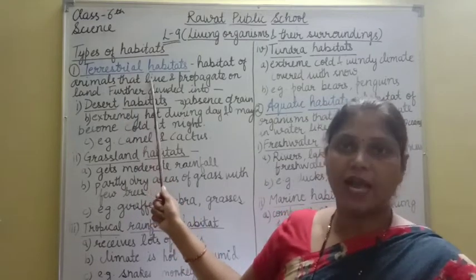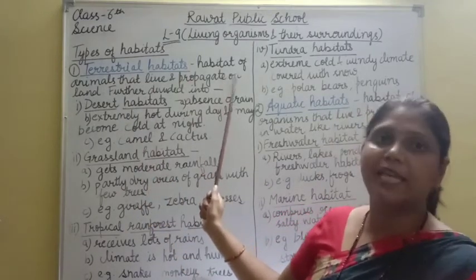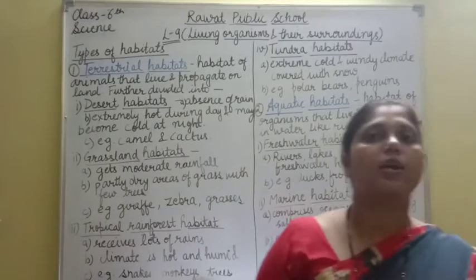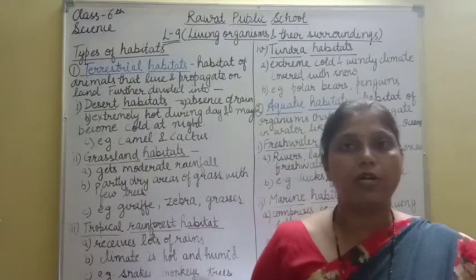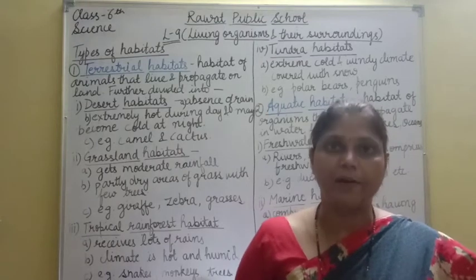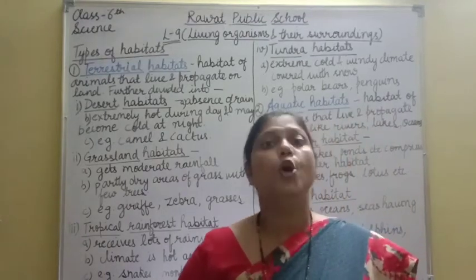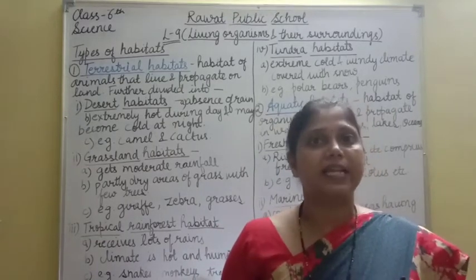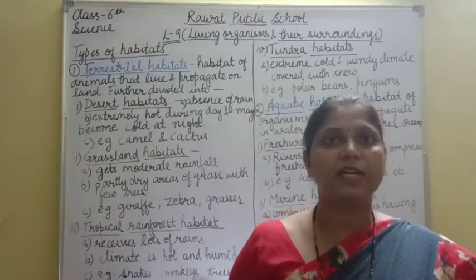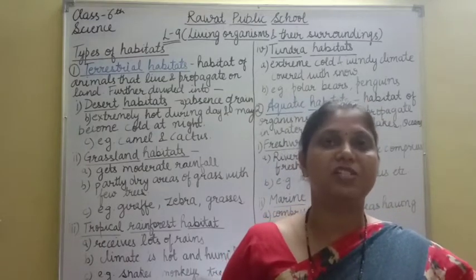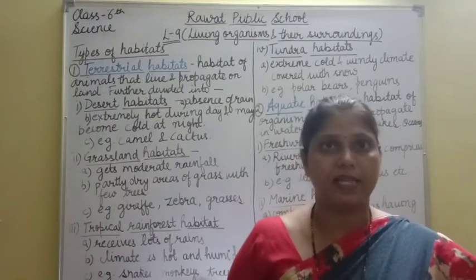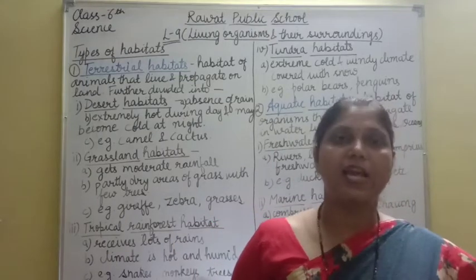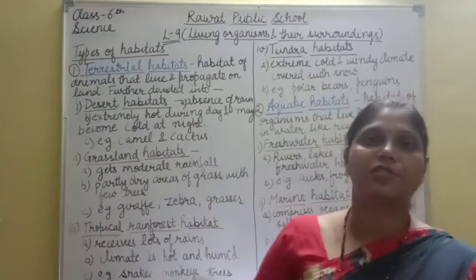First type of habitat is terrestrial habitat. This type of habitat is the habitat of animals that live and propagate on land. Propagate करना means number increase करना — वहीं breed करते हैं, खाते हैं, पीते हैं, reproduction करते हैं, और young ones को birth देते हैं. तो जो organism land पे रहते हैं और propagate करते हैं, they come under the terrestrial habitat.